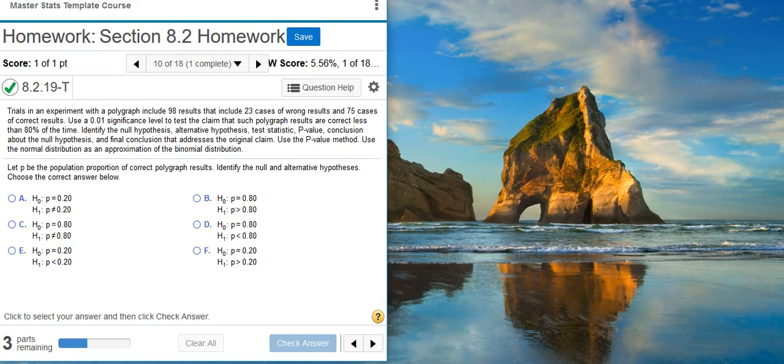Trials in an experiment with a polygraph include 98 results that include 23 cases of wrong results and 75 cases of correct results. Use a 1% significance level to test the claim that such polygraph results are correct less than 80% of the time. Identify the null hypothesis, alternative hypothesis, test statistic, p-value, conclusion about the null hypothesis, and final conclusion that addresses the original claim. Use the p-value method. Use the normal distribution as an approximation of the binomial distribution.